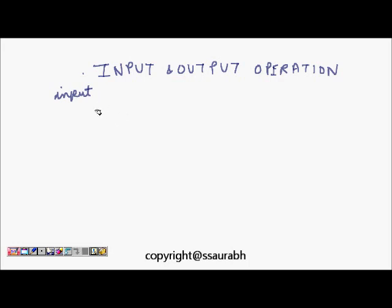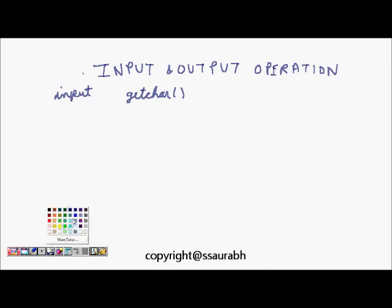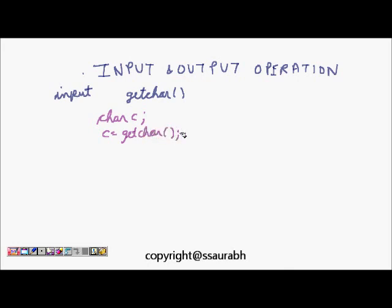The simplest function we have is getchar(). This function takes no argument but it returns a character. So if we write something like 'char c' and then 'c = getchar()', we can take input from the user and that will be stored in the character variable c.